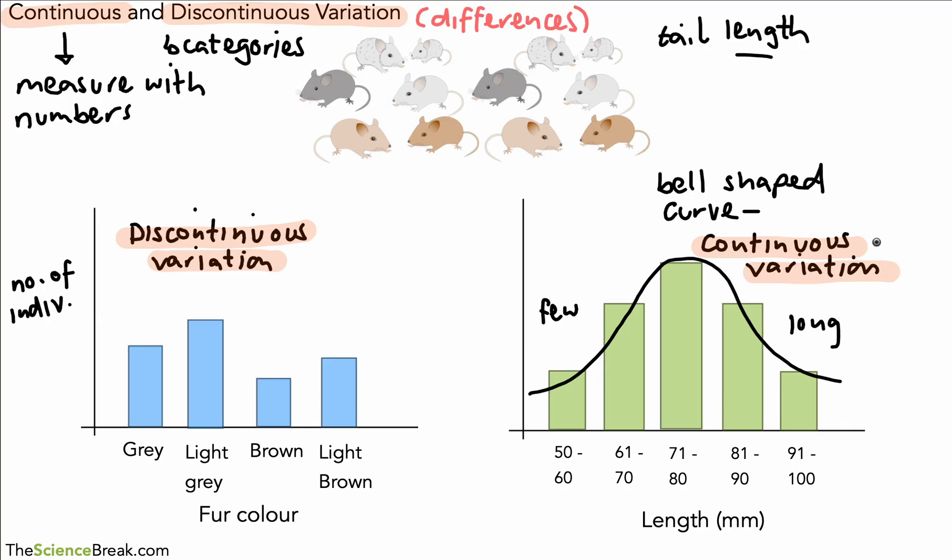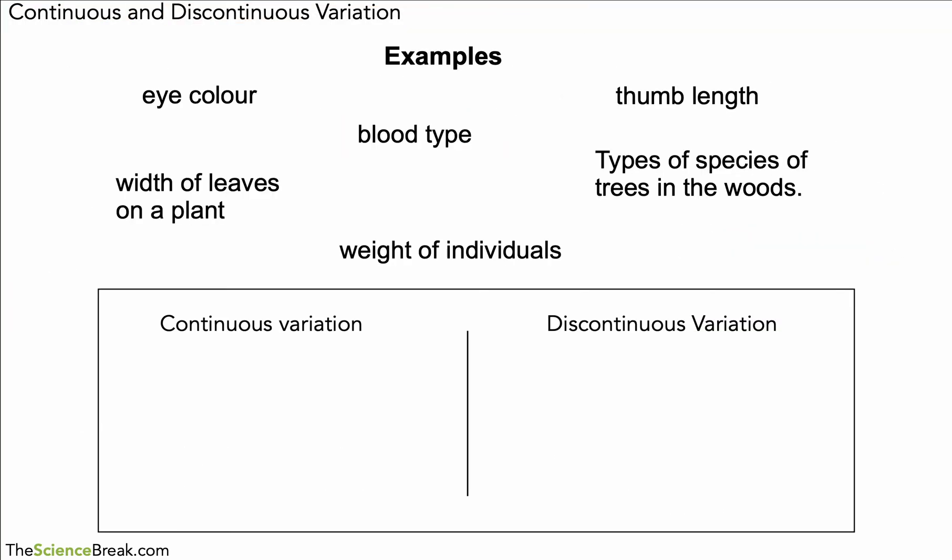Okay, so just to finish off today for this short video, let's have a look if we can figure out of these types of variation which are continuous and which are discontinuous. If you remind ourselves that continuous variation we assign a number value and for discontinuous it's a category, then this might help us. So might be an idea to pause here, there's one, two, three, four, five, six examples. Pause here, have a think about where each one might go. If you've downloaded the work-along sheet, you might just want to do this in pencil or something before you do the final answers.